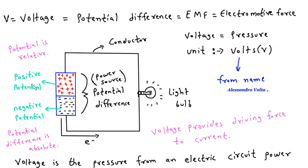One potential is positive and another is negative. The difference between two potentials is the potential difference. Potential is relative, while potential difference is absolute.